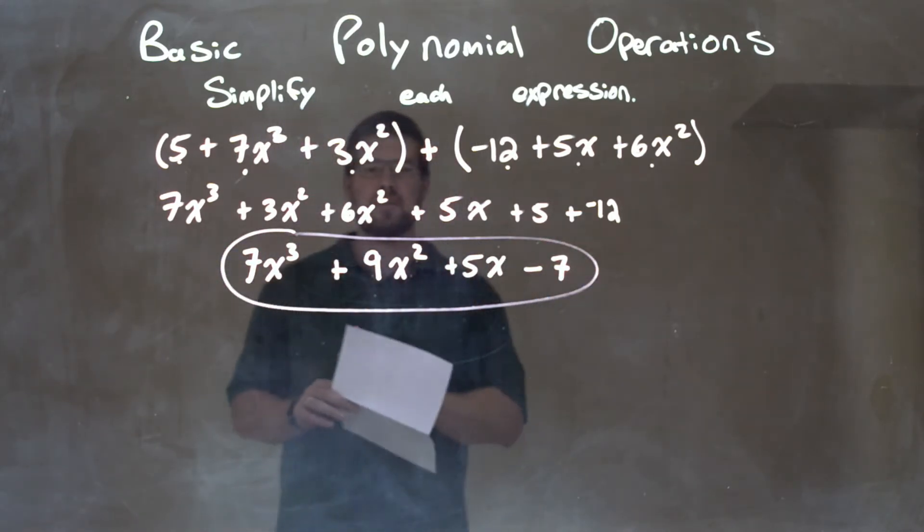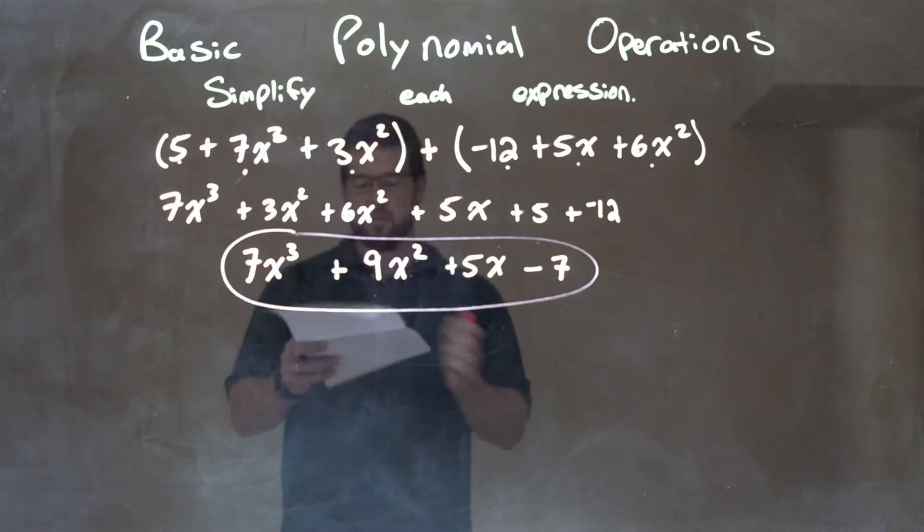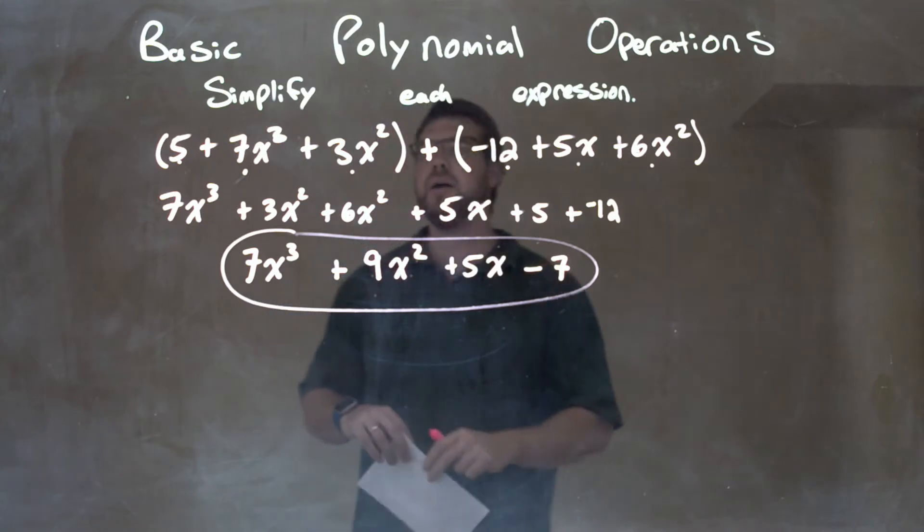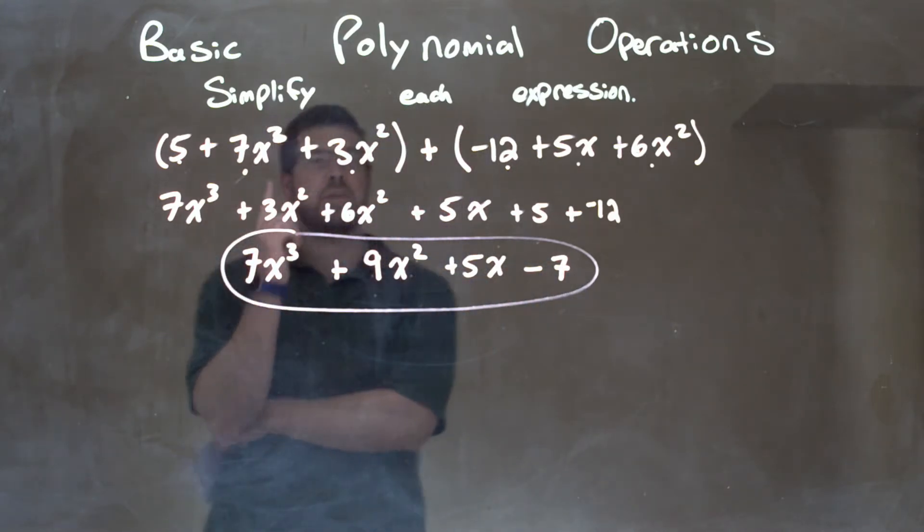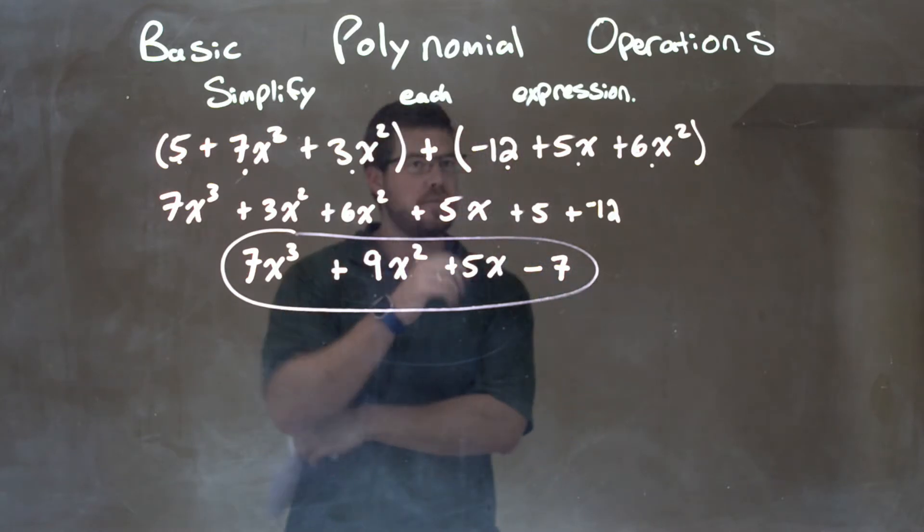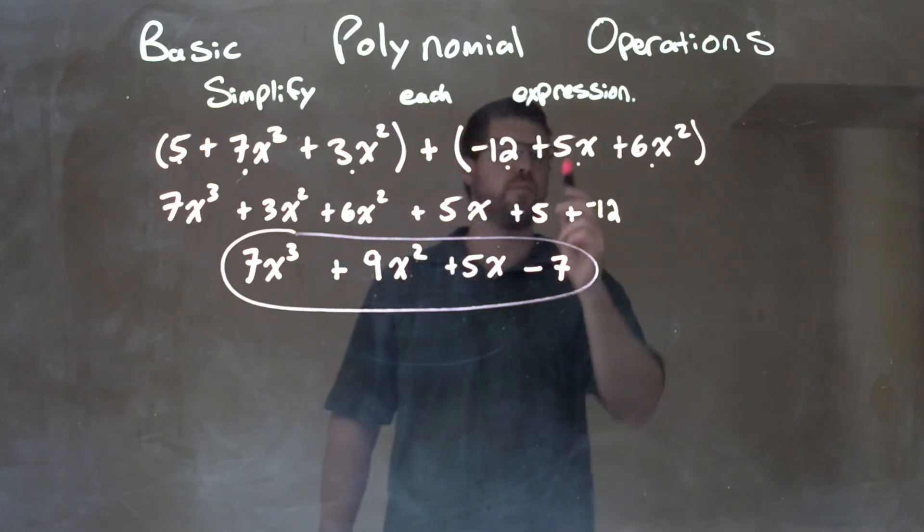7x to the third plus 9x squared plus 5x minus 7. So let's recap. We're given 5 plus 7x to the third plus 3x squared plus, and now the next parentheses, negative 12 plus 5x plus 6x squared.